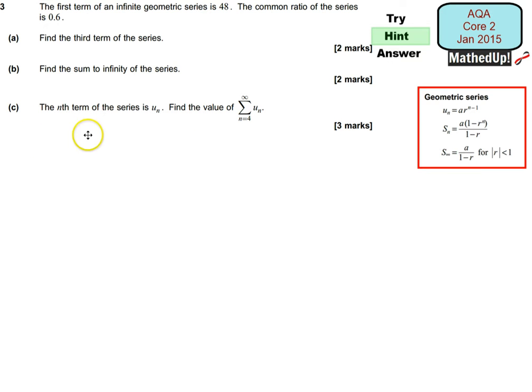For part C it says the nth term of the series is UN and we need to find the value of the summation from the fourth term to the infinite term. Well I know my sum to infinity. So that's going to give me my first to my infinite term. So I know what that is, the value of that because I've worked that out in part B.